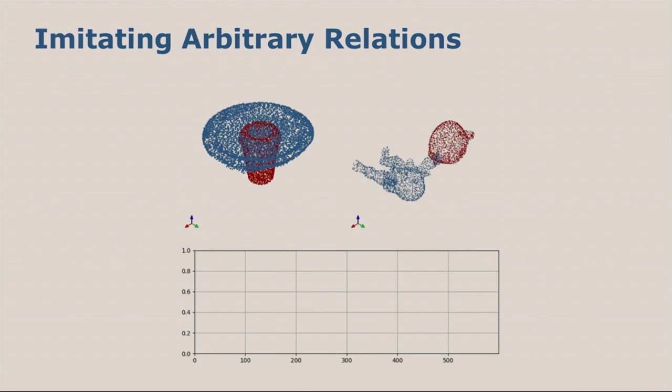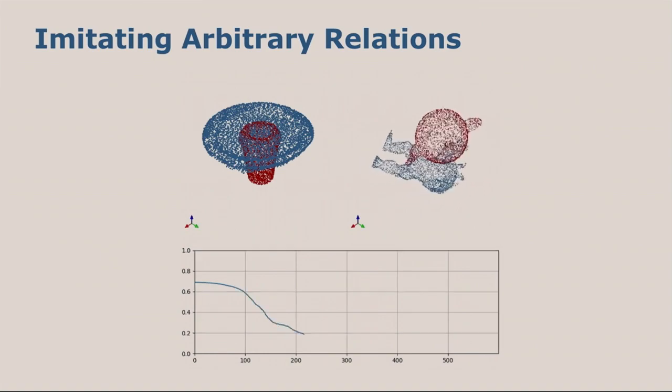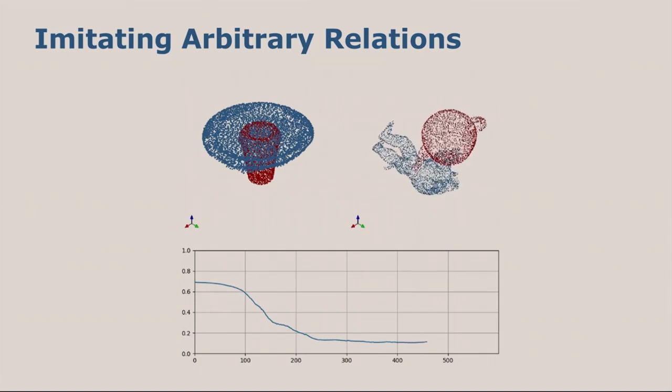We also evaluated this approach on completely unseen objects during training. This is the famous Utah teapot on the Stanford armadillo. We just use those as an initial scene and optimize to also have this on-top relation. As you can see, the teapot is successfully put on top of the armadillo, despite the fact that these objects were not used during training.